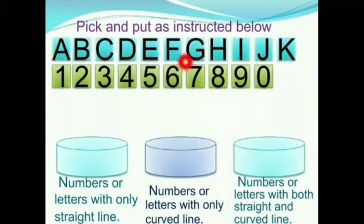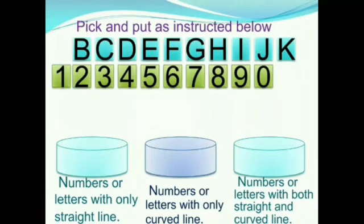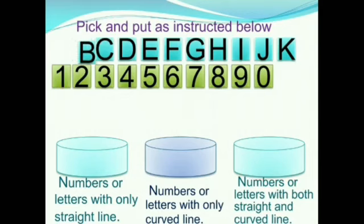First we will solve all the letters. The first letter is A. It has only straight lines, so we will keep it in the first box. Next we move to B. It has both straight lines and curved lines, so we will keep it in the third box. Next we move to C. It has only curved lines, so we will keep it in the second box.